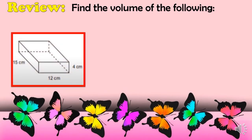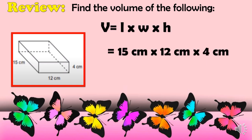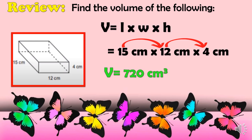For the last review figure, this is a rectangular prism, so we use V = L × W × H. Substituting: length is 15 cm, width is 12 cm, and height is 4 cm. Multiplying 15 × 12 × 4 gives us a volume of 720 cm³.